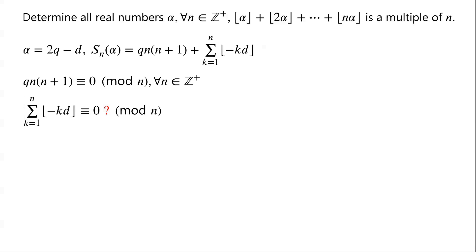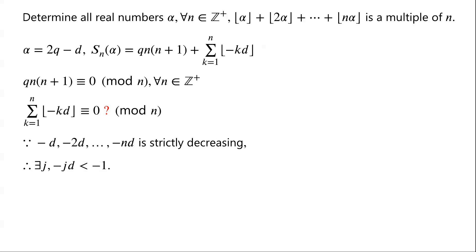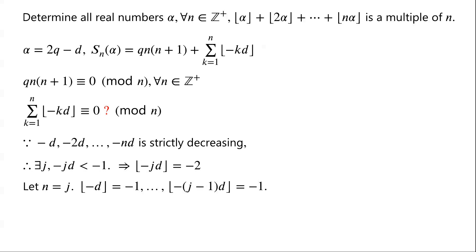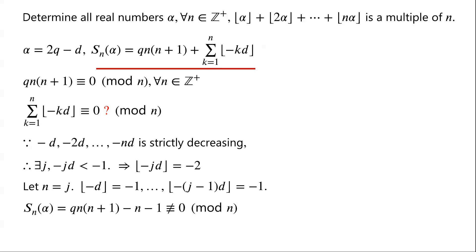Since −d, −2d, ..., −nd is strictly decreasing and d > 0, there must exist j such that −jd < −1. Then floor(−jd) = −2. Setting n = j, we get floor(−d) = floor(−2d) = ... = floor(−(j−1)d) = −1. Therefore S_n(α) = q·n(n+1) − (n−1), which is clearly not congruent to 0 modulo n. So α = 2q − d, equivalently α = 2p+1+f, does not satisfy the condition.